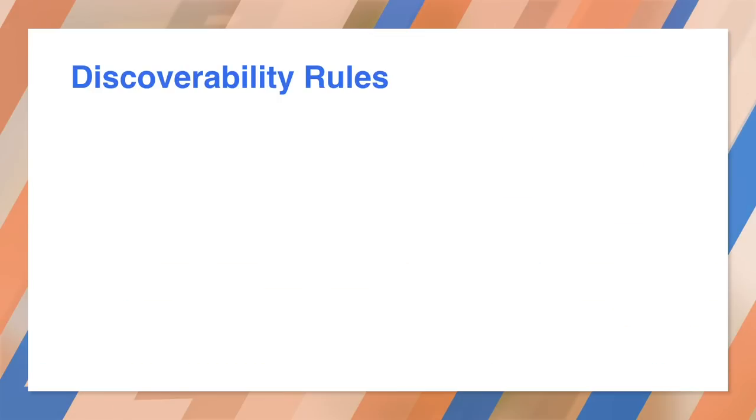While every search engine has its own way of crawling, there are two fairly obvious rules. First, if the crawler can't see it, it's not going to be indexed. And everything needs its own URL.